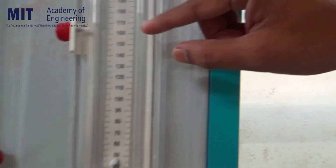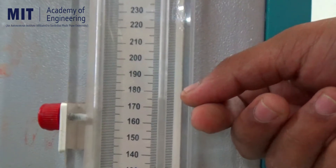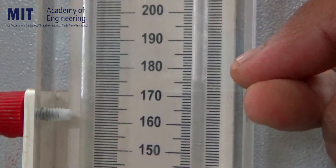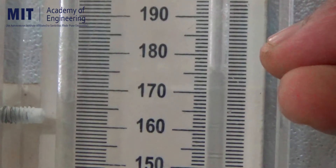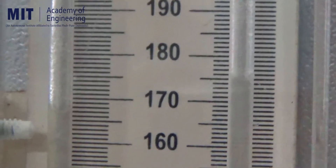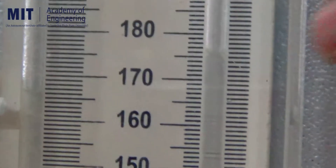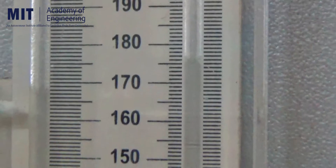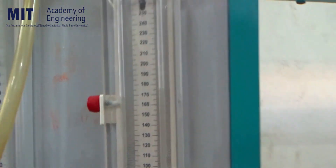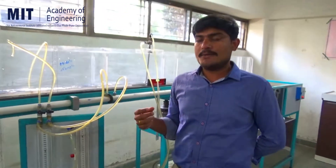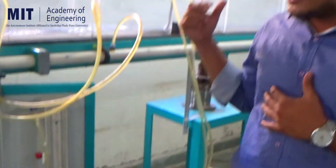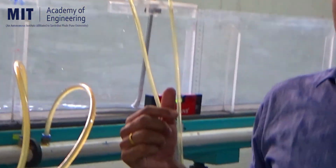Looking at the right limb, the reading is 171 mm — the fluctuations are almost absent, so it is easy to read. On the left limb, the reading on the scale is 165 mm. By noting these two readings, taking their difference, and applying the hydrostatic pressure law, we can easily determine the pressure difference between the two points at which we have connected the inverted U-tube differential manometer.